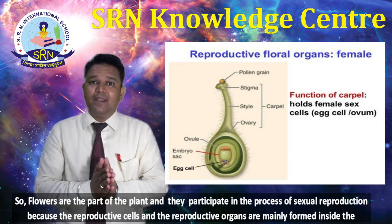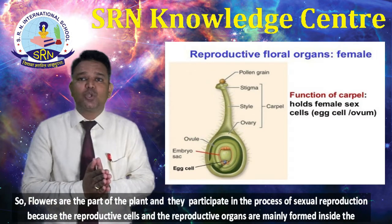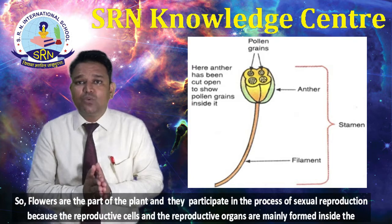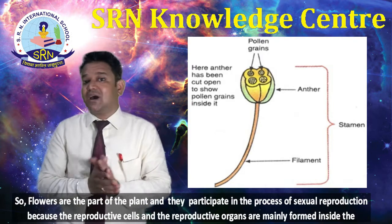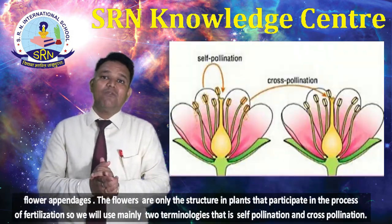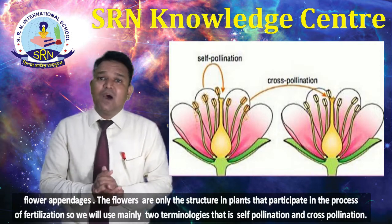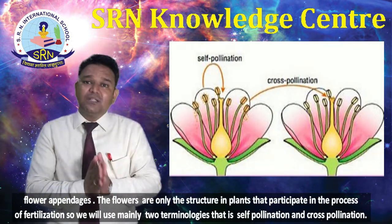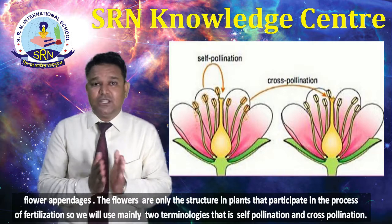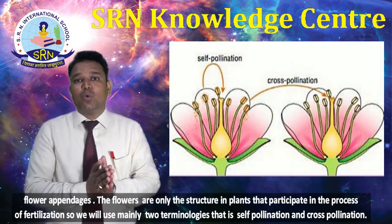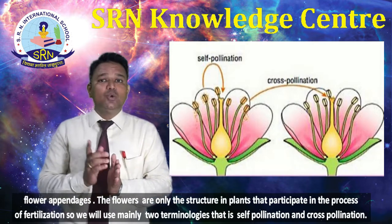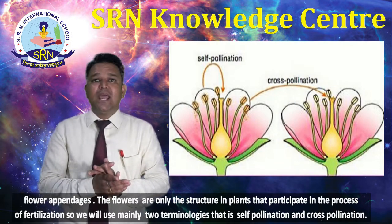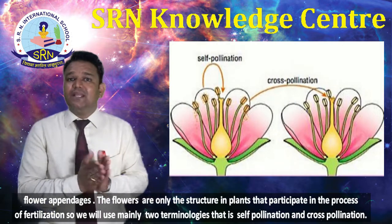Flowers participate in the process of sexual reproduction because the reproductive cells and the reproductive organs are mainly formed inside the flower appendages. Flowers are the only structures in plants that participate in the process of fertilization. We will use mainly two terminologies: self pollination and cross pollination.